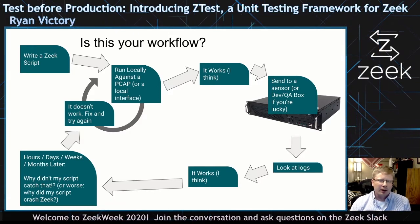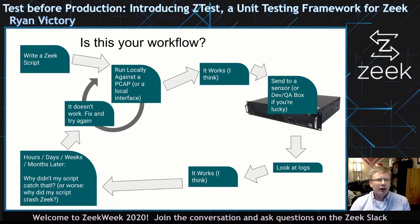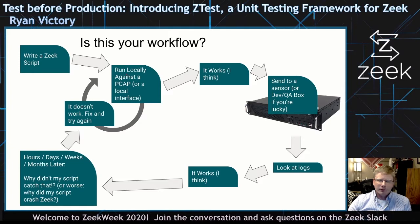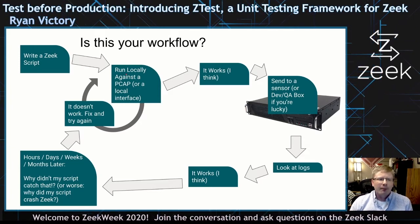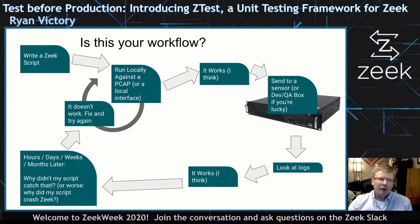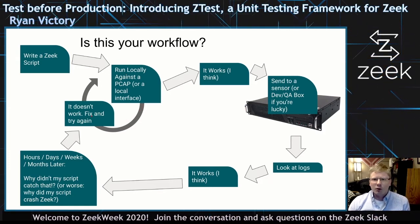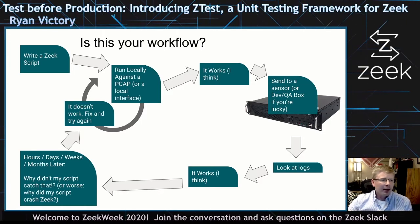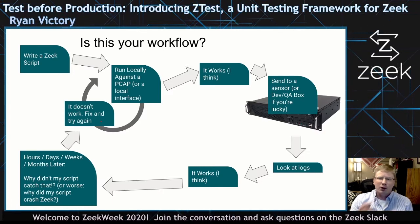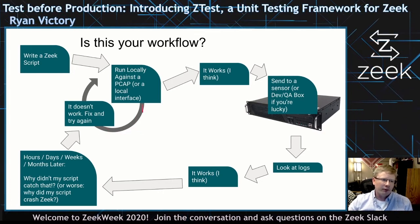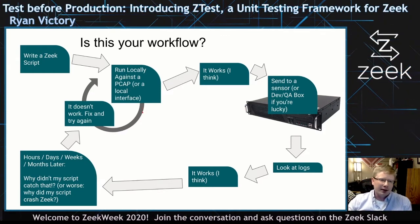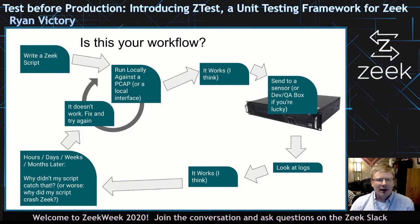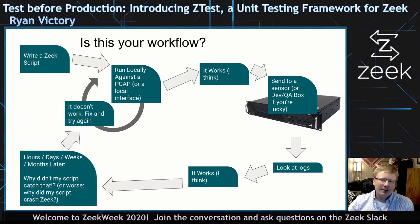So maybe this is your workflow. You've decided you want to write a Zeek script to detect something or collect some information. You decide to run it locally on your machine, or maybe in a VM or Docker image, against a packet capture file or local interface. Then you usually find out it doesn't work — if you're like me, you try about four times before the Zeek interpreter even says your code is valid. So you go into this cycle of local testing, fixing, local testing, fixing until you say it works. Really, what you should be saying is 'I think it works,' because you probably won't know until you have real traffic. So you end up sending it to a sensor.